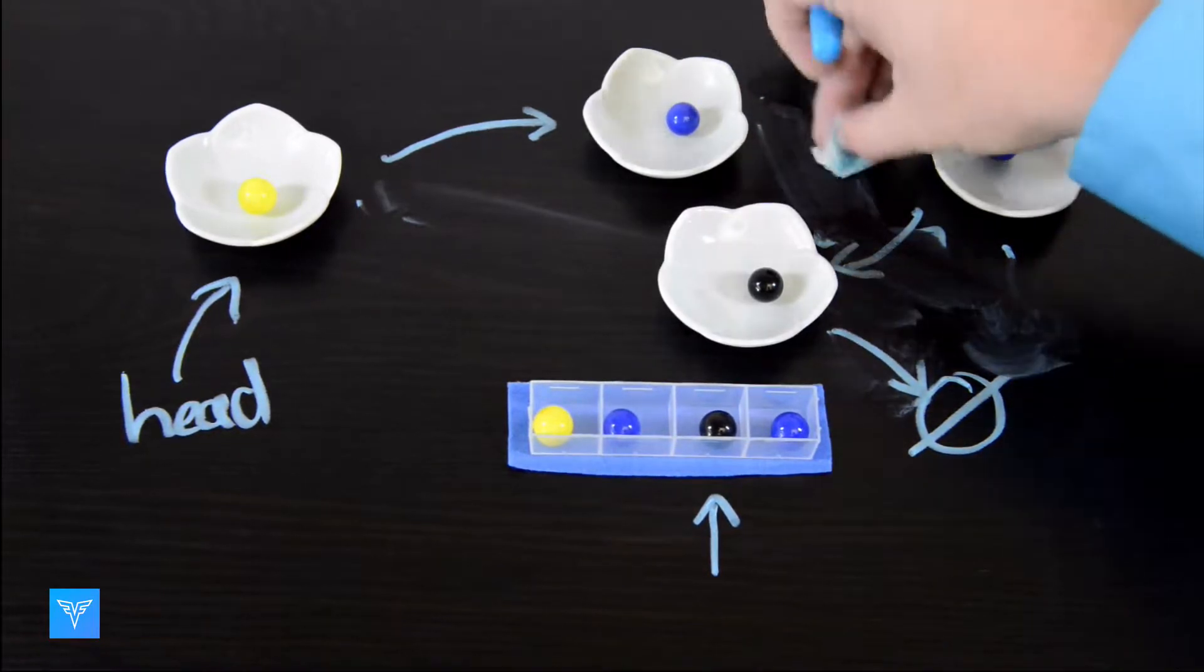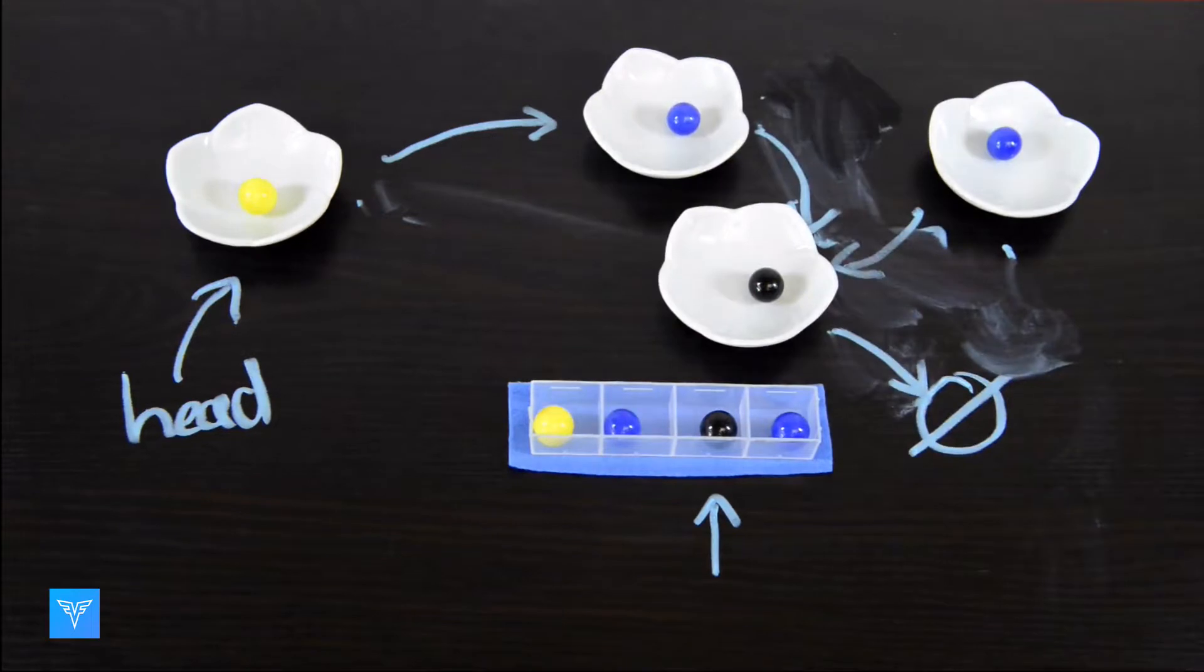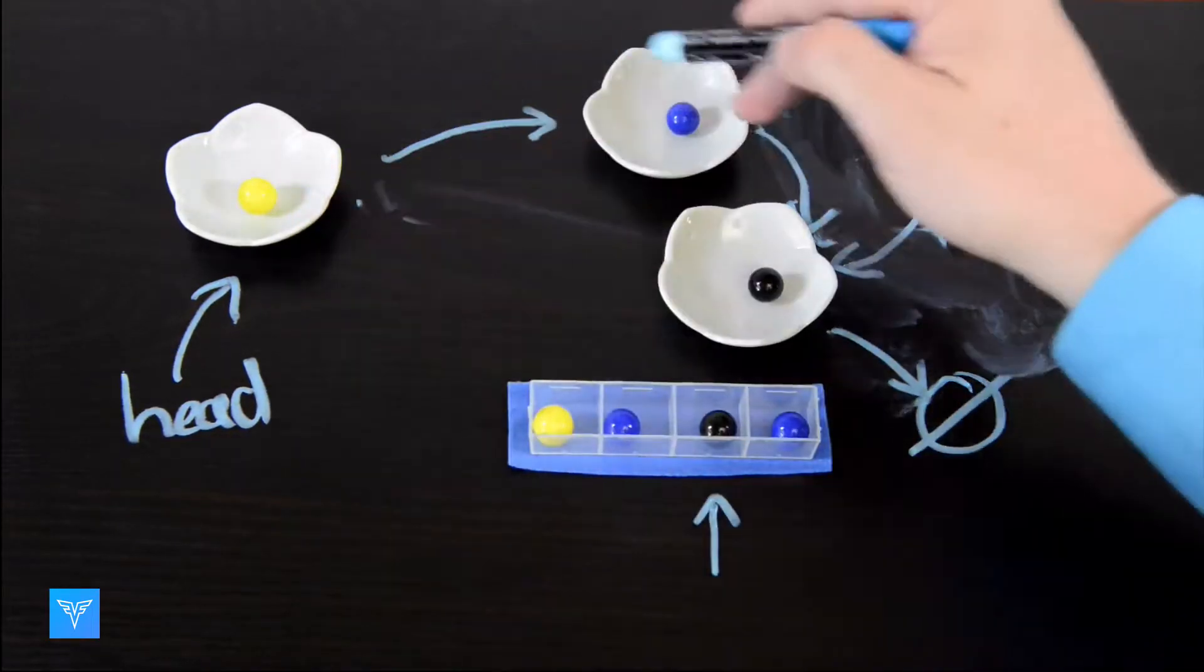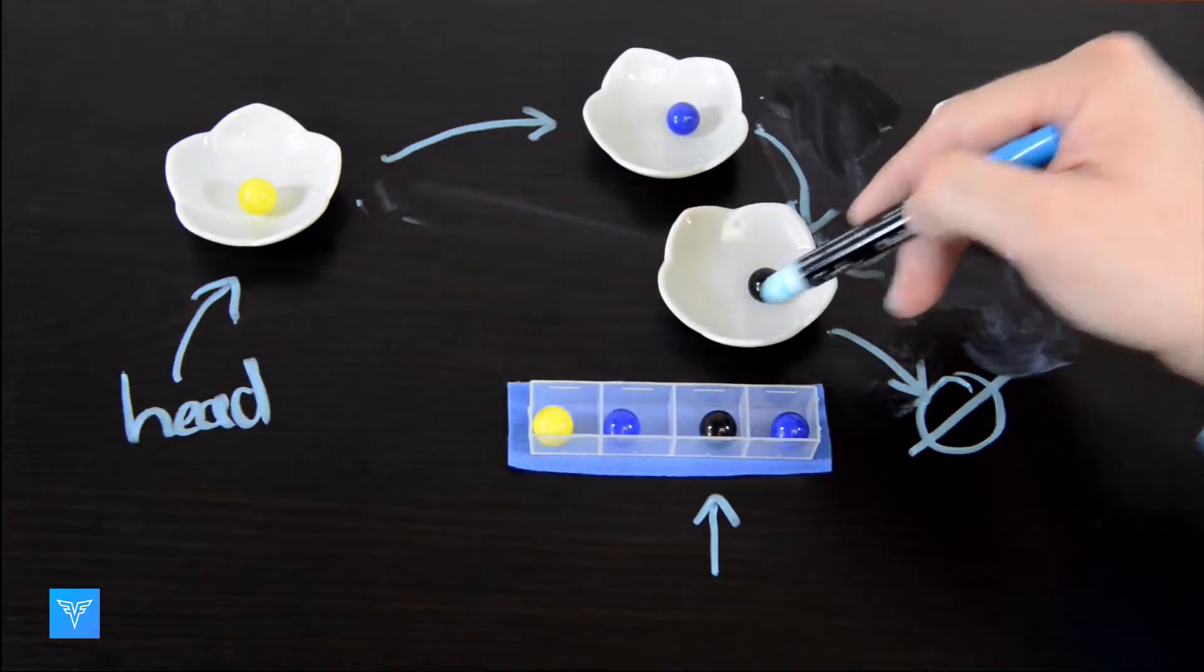We would start by changing this pointer to point to the black node here. Now notice we have one, two, three nodes, and this points to null.